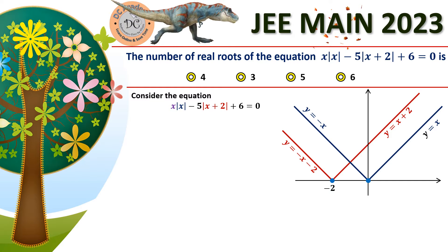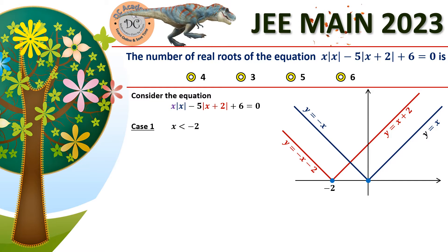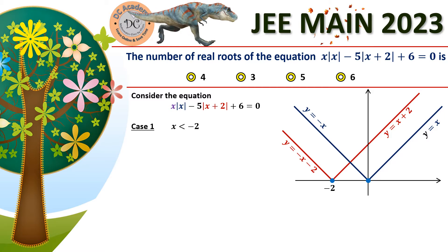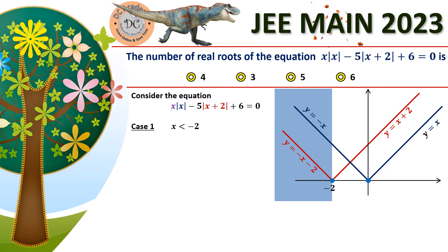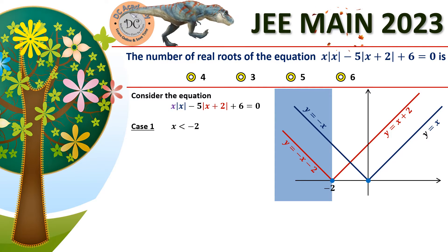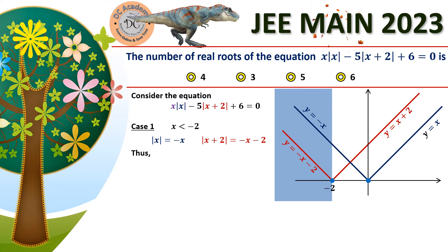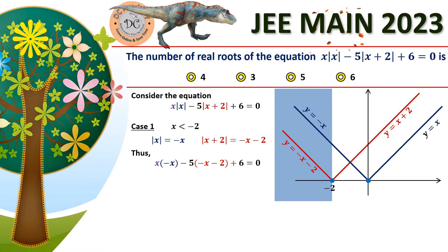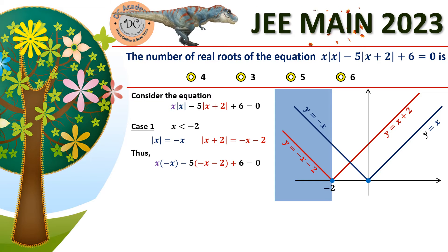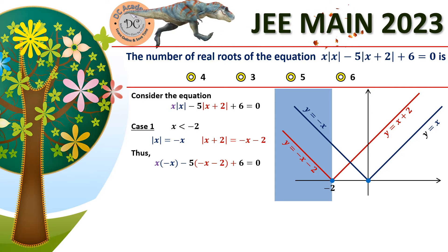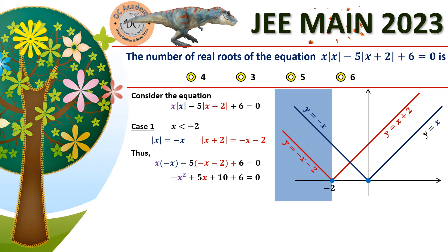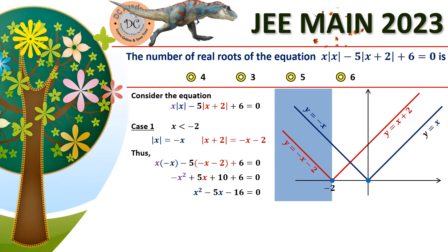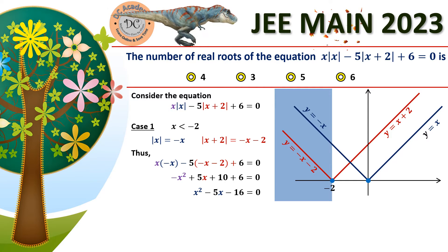Case 1: x < −2. In this domain, |x| = −x and |x + 2| = −x − 2. Substituting these into the given equation and simplifying by cross multiplication, the equation reduces to the quadratic x² − 5x − 16 = 0.